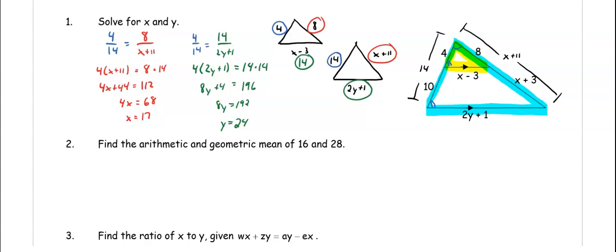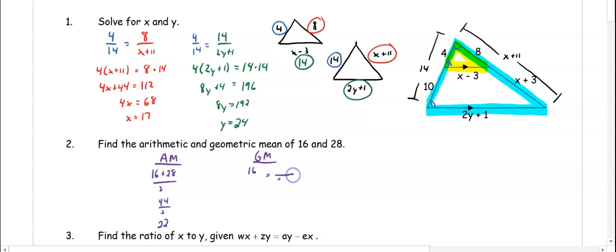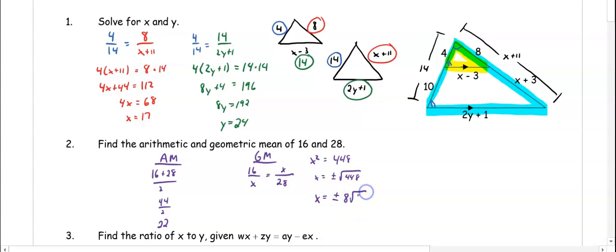In number two, we want to find arithmetic and geometric mean. Arithmetic mean is just finding the average — we add the two numbers together and divide by 2. So 16 plus 28 is 44, divided by 2 gives us 22. For geometric mean, we put 16 and 28 on diagonals in a proportion with x's as the missing part. When we cross multiply we get x squared equals 448. Taking the square root — 448 is not a perfect square, but we can simplify to get 8 root 7.